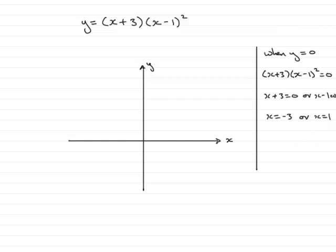So I know it crosses the x-axis, then, at negative 3 and 1. So we'll mark in negative 3, say, here, and we'll put 1 here.